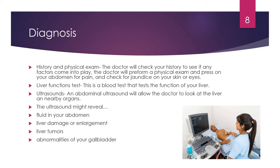There are also liver function tests, which use blood samples to determine if your liver is working properly. This can be a first indication that there's a problem, because sometimes you don't always show signs of the disease. Additionally, an abdominal ultrasound uses ultrasound waves to create an image of your liver and surrounding organs. This can reveal fluid in your abdomen, liver damage or enlargement, liver tumors, or any abnormalities of your gallbladder.